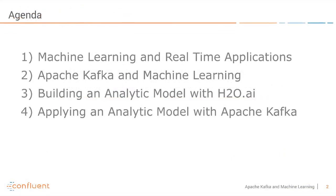The agenda for this session is the following. First I will talk shortly about machine learning and real-time applications — what's the business case for this, why are companies doing this, and what's the goal for you as a company. Then I will talk about Apache Kafka and machine learning and how they are related from an architecture perspective, before going into the how-to and live demos where I show how to build an analytic model and how to deploy that to Apache Kafka with the Streams API to apply an analytic model to new events in real-time.